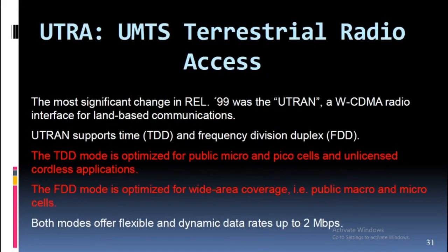UTRA (UMTS Terrestrial Radio Access): The most significant change in Release 99 was the UTRAN, a WCDMA radio interface for land-based communications. UTRAN supports both TDD (Time Division Duplex) and FDD (Frequency Division Duplex). The TDD mode is optimized for public micro and pico cells and unlicensed cordless applications, while the FDD mode is optimized for wide area coverage in public macro and micro cells. Both modes offer flexible and dynamic data rates up to 2 Mbps.